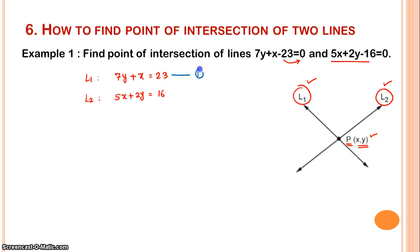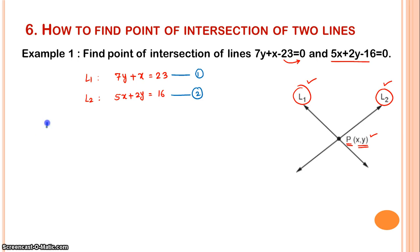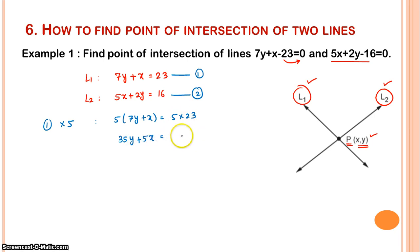We need to solve these two simultaneous equations to find x and y. To eliminate x, we multiply the first equation by 5: 5 times (7y plus x) equals 5 times 23, which gives us 35y plus 5x equals 115. This is equation number 3.